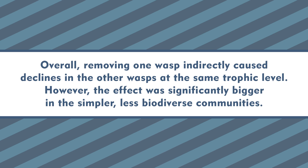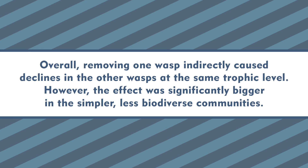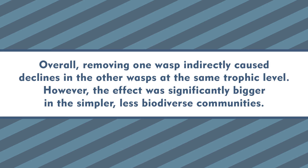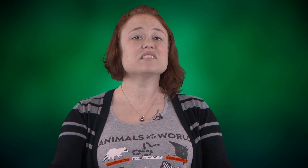Overall, removing one wasp indirectly caused declines in the other wasps at the same trophic level. However, the effect was significantly bigger in the simpler, less biodiverse communities. So in this study, it turned out that losing biodiversity made the communities more vulnerable to secondary extinctions. And since secondary extinctions can make communities simpler, this could cause even more extinctions down the line.